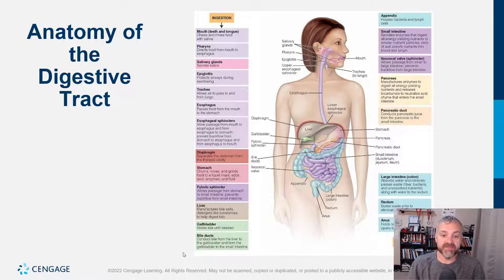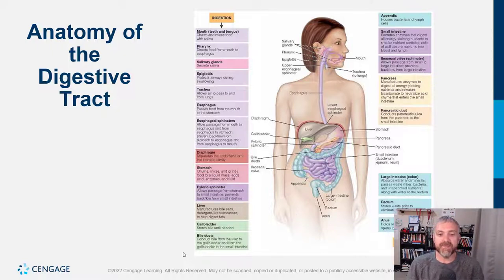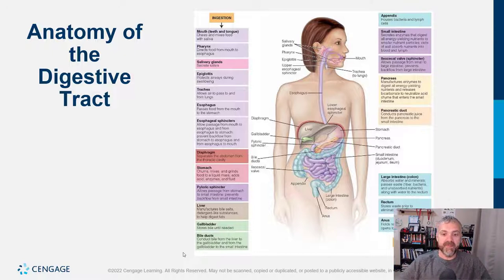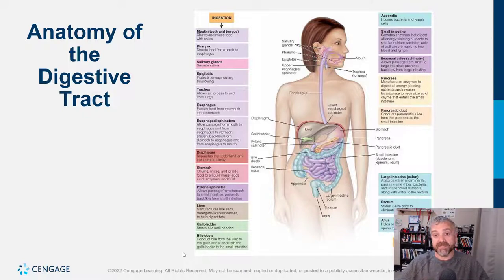The appendix: a lot of times people say the appendix doesn't do anything, but we've known for quite a while that it does. The appendix houses bacteria and lymphatic cells. It plays a role in the maturation of your immune system. Also, it appears that after diarrhea or after antibiotic use — when your microbiome has been partially destroyed — the microbes in the appendix come out and help repopulate it. That's why your microbiome recovers from antibiotics and diarrhea relatively well.